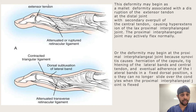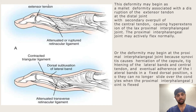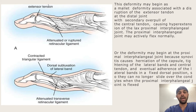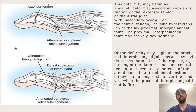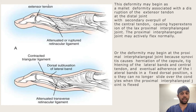The deformity may also begin at the proximal interphalangeal joint itself — because of synovitis or another medical condition causing herniation of the capsule. This results in tightening of the lateral bands and the central tendon, and eventually adherence of the lateral bands in a fixed dorsal position. They can no longer slide over the condyles when the PIP joint is flexed, so you can't flex the PIP joint — it remains in hyperextension because the lateral bands have subluxated dorsally and are fixed.